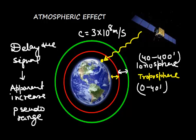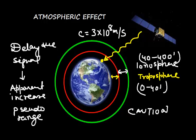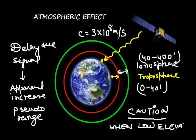The magnitude of the error depends on the elevation of the satellite and the time of day. It is not possible to eliminate these errors completely. The GPS receiver has a built-in model of the atmosphere to calculate the average amount of delay and applies correction. Users should use the GPS position with caution when low-elevation satellites are available.